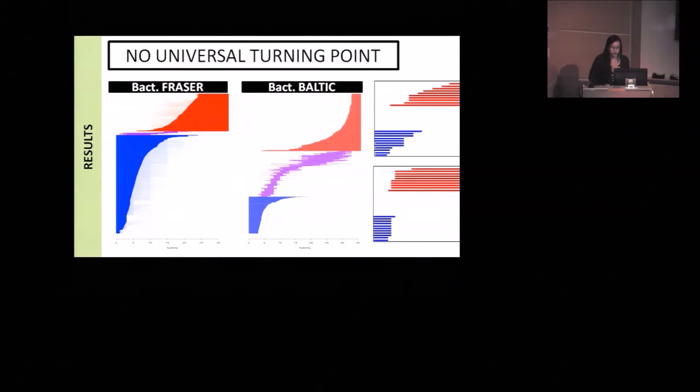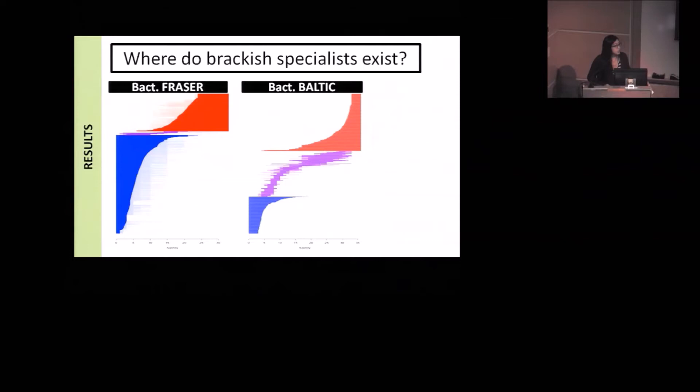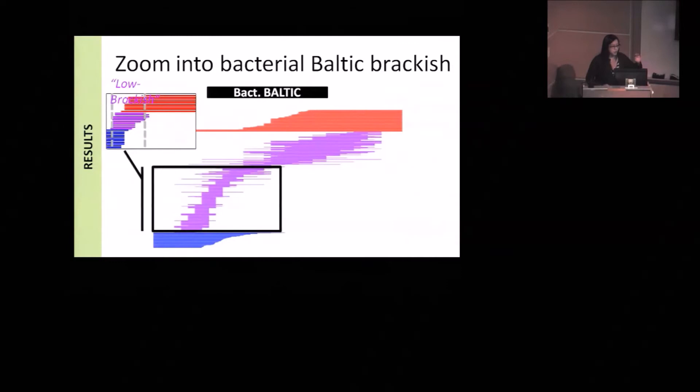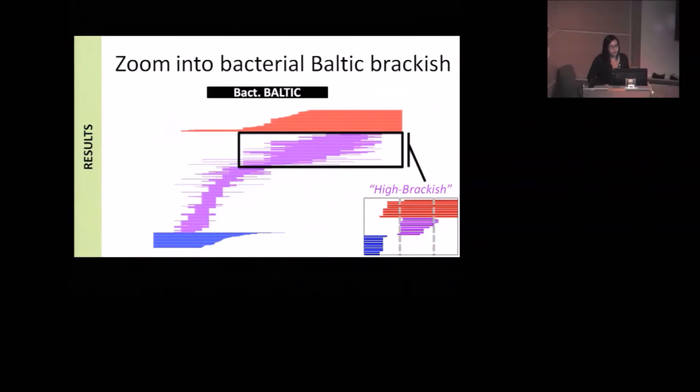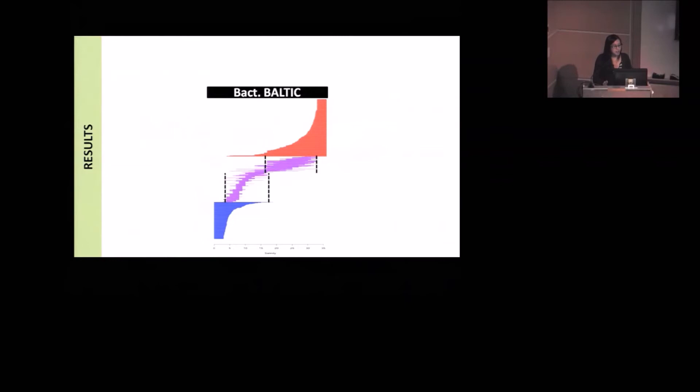The second question was, where do brackish water specialists exist? To look at this, we wanted to zoom into the Baltic data set because they happen to have more brackish water specialists. If you zoom into it, you see there's this cool trend where there are two kind of groups. There's a low brackish group that spans from approximately five parts per thousand to 10 parts per thousand. And then there's a high brackish group that goes from about 10 to 20 or so parts per thousand. I thought that was really neat. I thought that the ranges would all be the same, but apparently they are quite different.